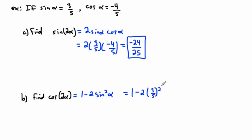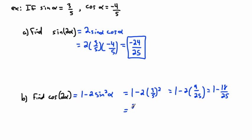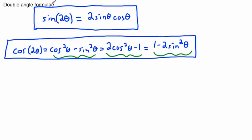Sine alpha is three over five, so this becomes one minus two times three over five squared. That's one minus two times nine over twenty-five, which is one minus eighteen over twenty-five. Using a common denominator: twenty-five over twenty-five minus eighteen over twenty-five equals seven over twenty-five. That's as far as we can go. This is how we use double angle formulas — for cosine we choose whichever version we want, but for sine there's just the one formula.